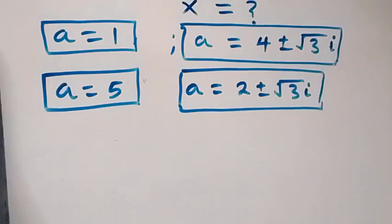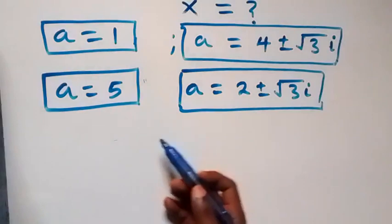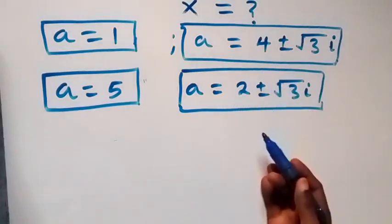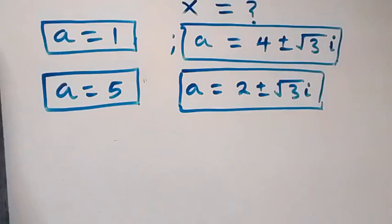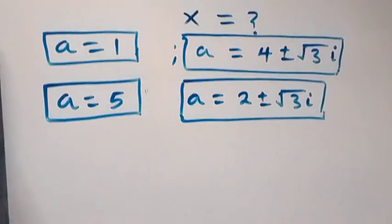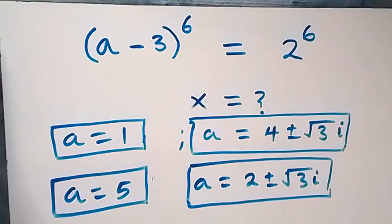All together we have six solutions: two real solutions (a equals 1 and a equals 5) and four complex solutions. Thank you for watching. Don't forget to subscribe for more videos and turn on the notification bell, share this video and give it a thumbs up. See you next class, bye for now.